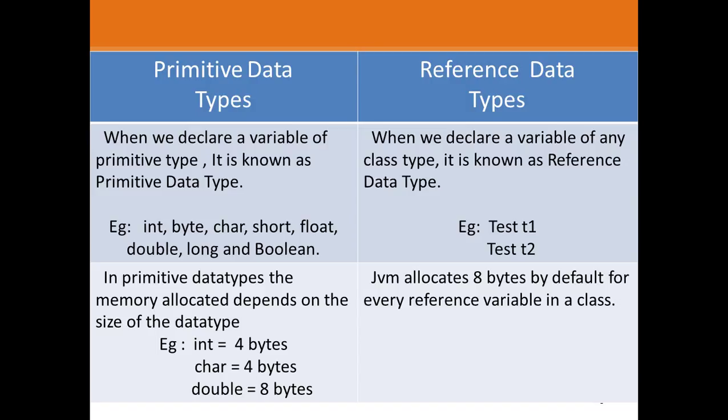In primitive data types, the memory allocated depends on the size of the data type. When JVM allocates memory in Java, it depends on the size of the data type and every data type is having different size. For example, int will have four bytes, char will have four bytes, whereas double will have eight bytes.